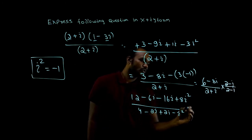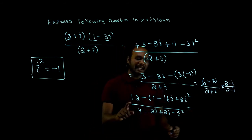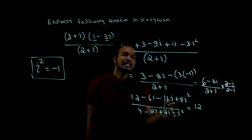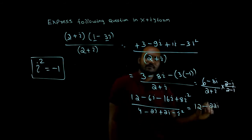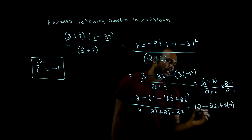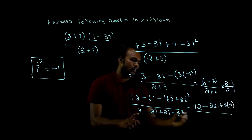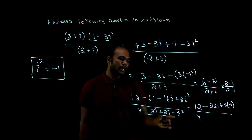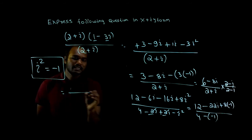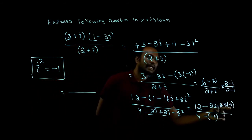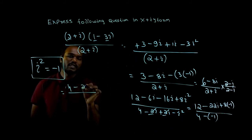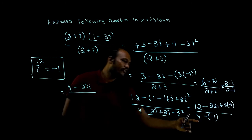So what we have? 12 minus 6i minus 16i is minus 22i, plus 8 into i square value is minus 1, divided by 4. This 2 and this 2 get cancelled, and minus i square is minus 1. The final result: in the numerator we have 12 minus 8, that's 4 minus 22i divided by 4 minus minus is plus, so 4 plus 1 is 5.